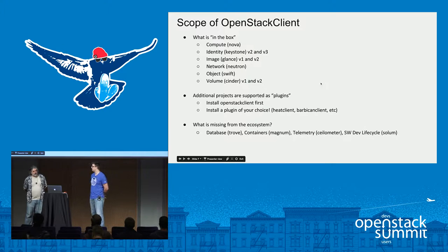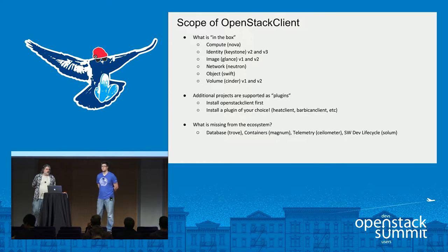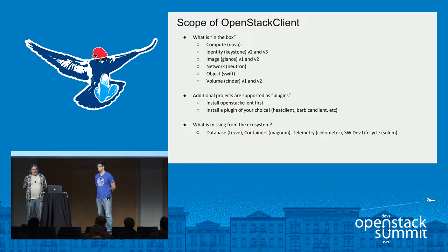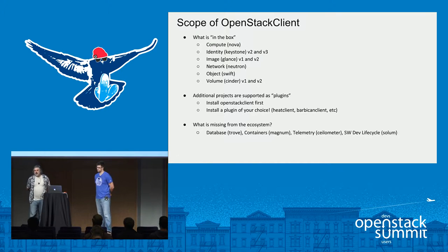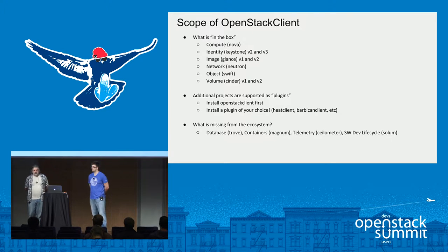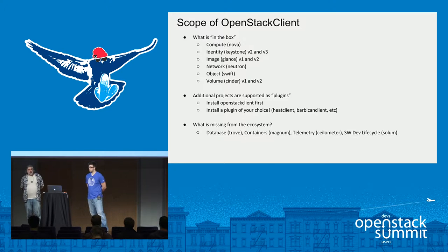So the scope of it — the stuff that's in the OSC repo is essentially what existed at the time I started. And then we added networking — Quantum/Neutron — when that became a thing, although it's only been with the last release that we've got any substantial support for the network API. Almost two years ago, we added support for plug-ins to allow the other clients to tap into the OSC shell and be a part of it.